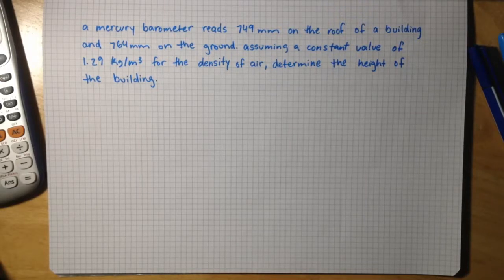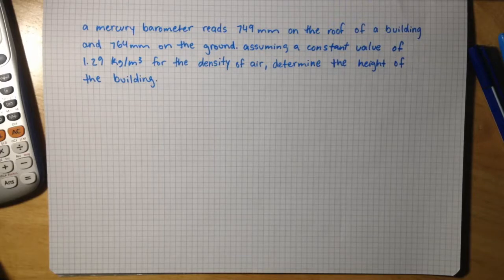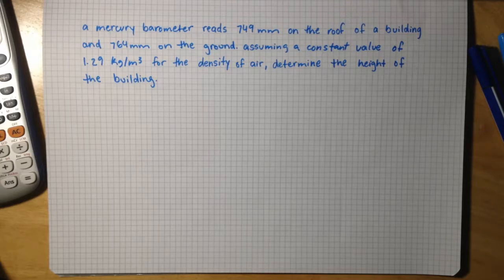A mercury barometer reads 749 millimeters on the roof of a building and 764 millimeters on the ground. Assuming a constant value of 1.29 kilograms per meter cubed for the density of air, determine the height of the building.